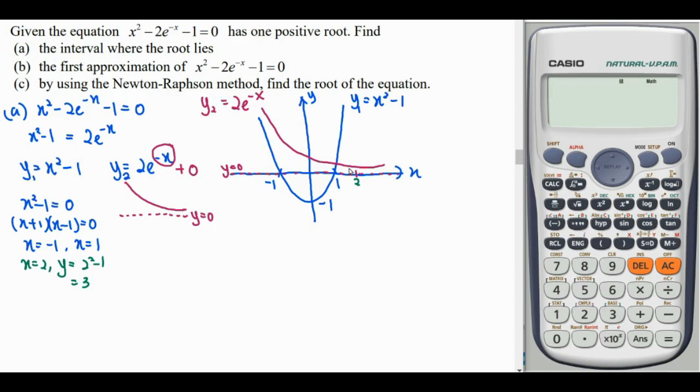Meanwhile, for the exponential graph, when x = 2, this coordinate will give you 0.271. So from here, we can identify that at the coordinate of 2, the quadratic graph is going up to a value of 3, and the exponential graph is going down to reach the coordinate of 0.27.